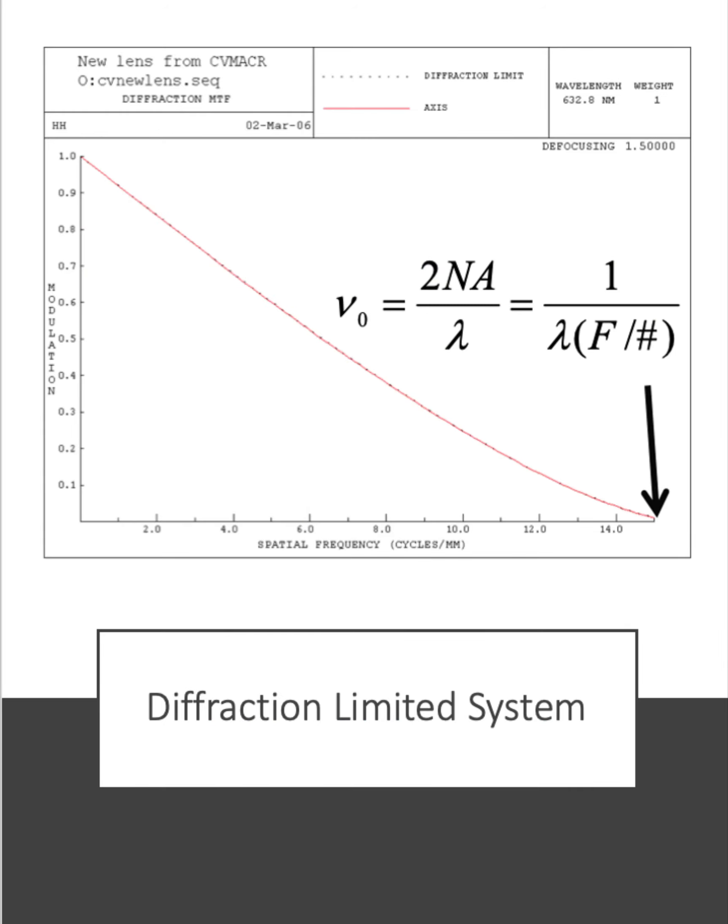In the case of a diffraction-limited system or an aberration-free system, the MTF is completely dependent upon the wavelength and the F number. This is because the line spread function is characterized by the Airy disk, and optical aberrations do not extend beyond what is physically limited by the diffraction of the system.